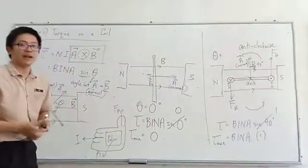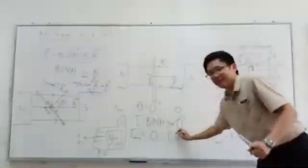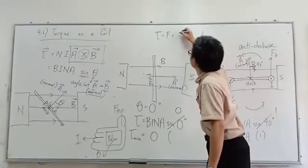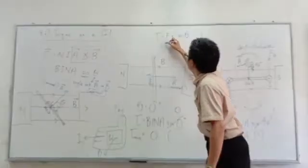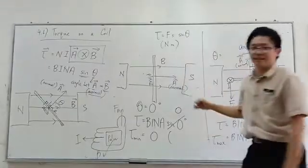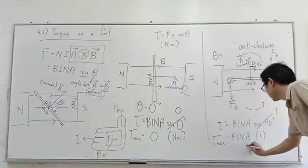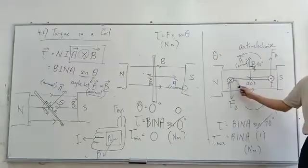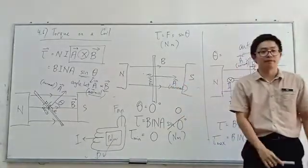What's the unit for torque? Torque is force times distance, so the unit is Newton meter — the same unit as work done. To summarize: when the plane is parallel to the magnetic field, you get maximum torque; when the plane is perpendicular to the magnetic field, you get zero torque.